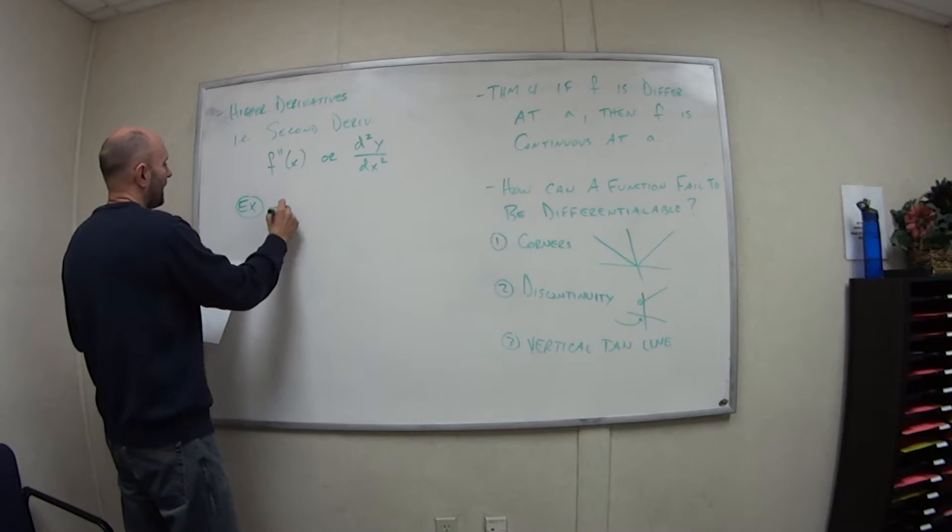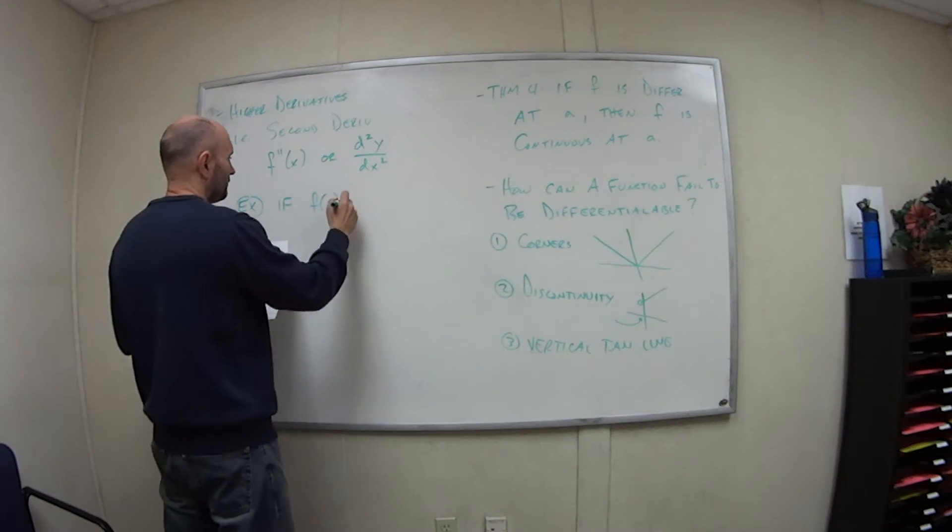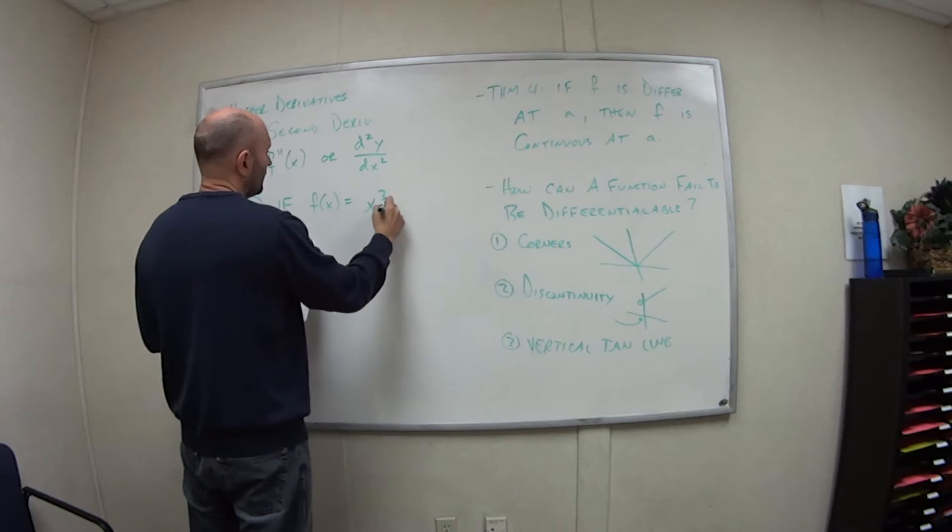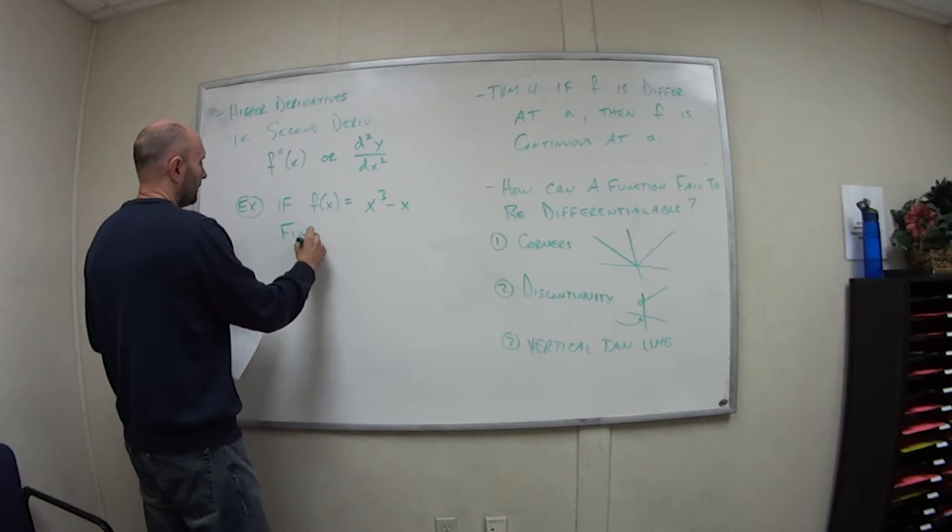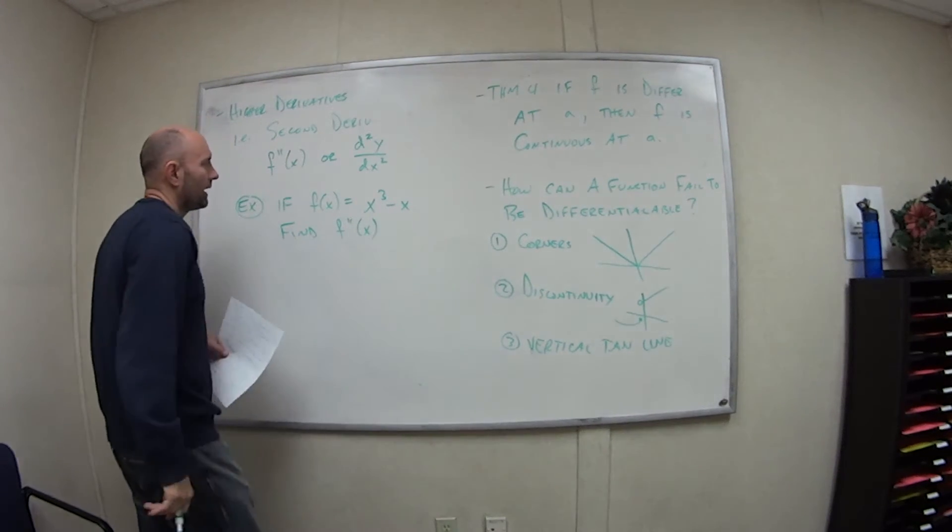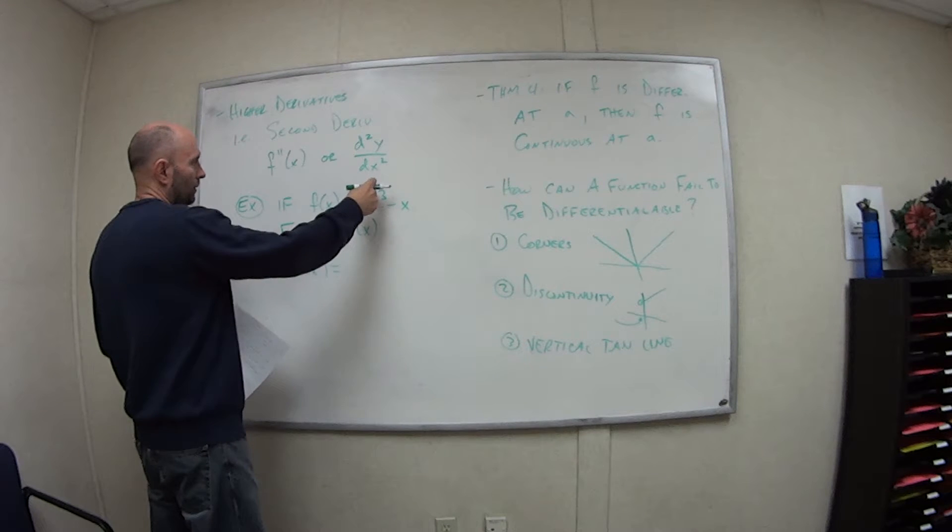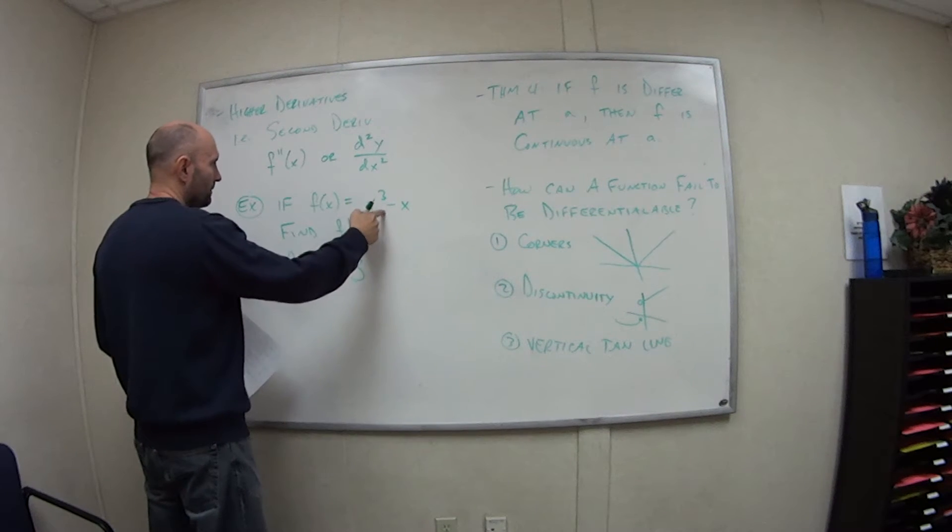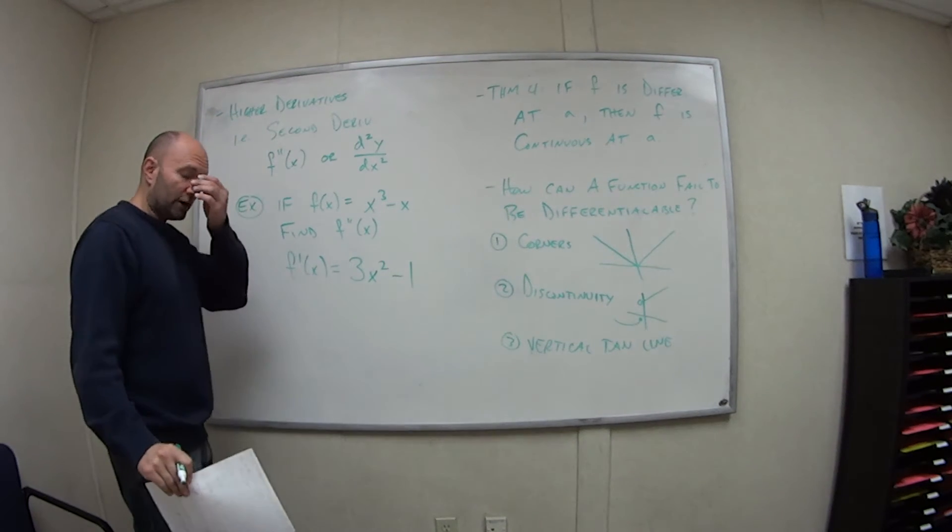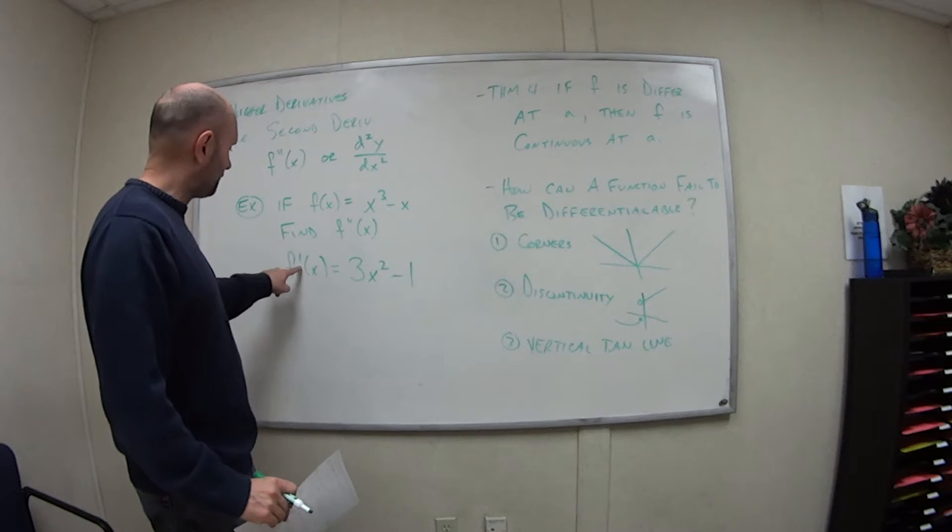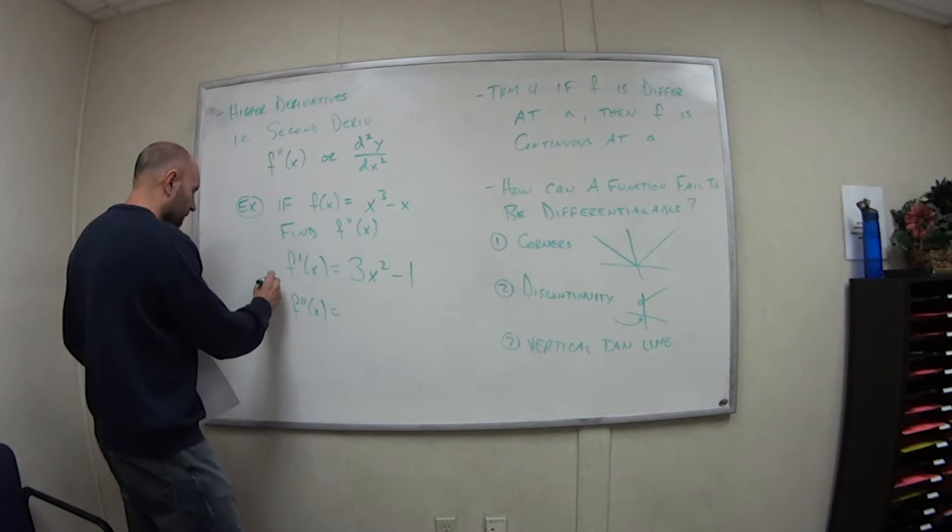So for example, if I have like the example we looked at in the very first video for this section, the very first example we had f of x equals x to the third minus x. If we want to find the second derivative of x, well we had the first derivative of x, we'll do it again: three times one is three, three minus one is two, so three x squared minus one. Again, that was the very first example we looked at in this section, that's the first derivative.